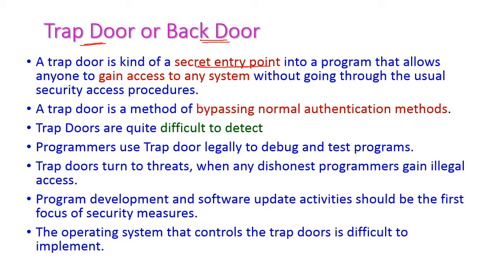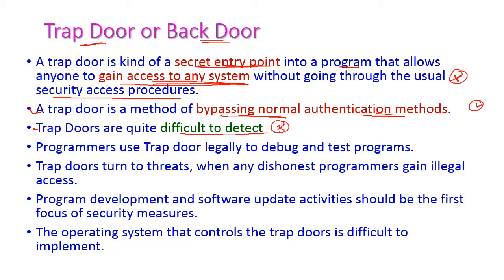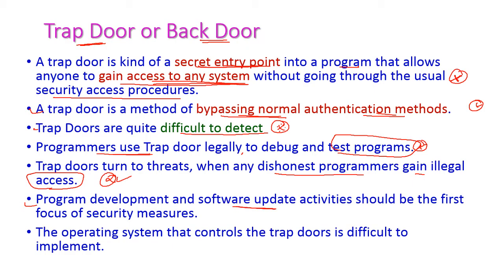The second one is the trapdoor, or backdoor. It is a kind of secret entry point into a program or system which allows access without going through the usual security procedures. The trapdoor program can access all system activities and is a method for bypassing normal authentication methods. It is quite difficult to detect. Normally programmers use trapdoors legally to debug and test programs, but it becomes illegal when a dishonest programmer gains illegal access and threatens all programs. Controlling a trapdoor in an operating system is very difficult to implement.